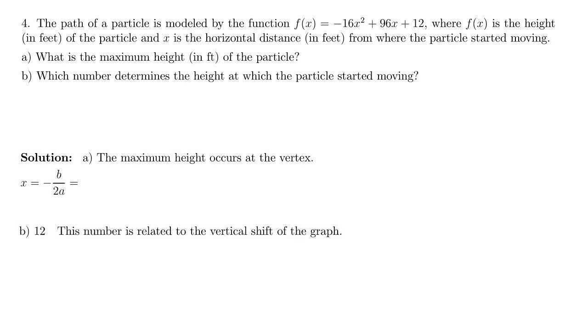In problem four, we're looking at some projectile motion here. We've got a particle whose path is modeled by negative 16x squared plus 96x plus 12, and f of x is its height in feet, and it moves x horizontal distance from where it started.